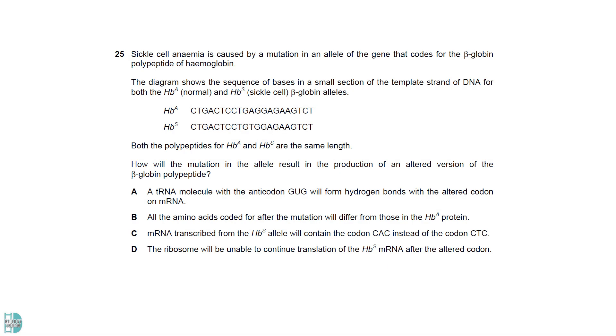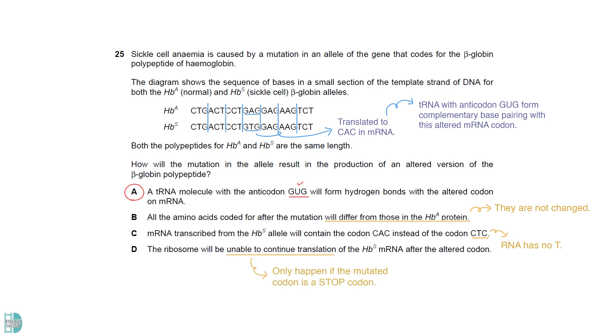The difference between the genes is on the fourth triplet. GTG will be translated to CAC in the mRNA. The tRNA with an anticodon GUG will form a complementary base pairing with this altered mRNA codon. B is wrong because the codons after the mutation remain unchanged. C is wrong because mRNA does not contain thymine. D is incorrect because this would only happen if the mutated codon is a stop codon.